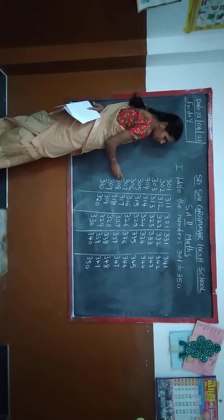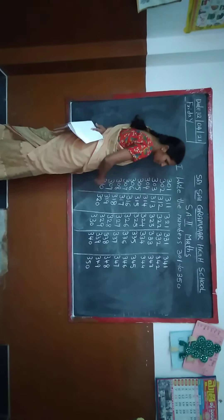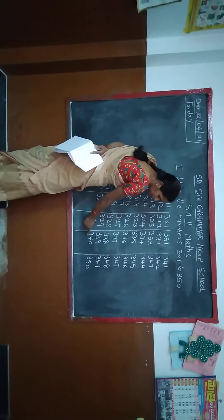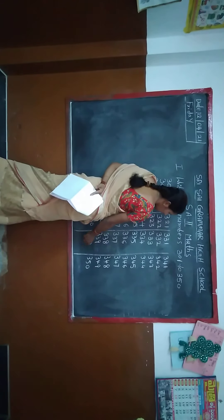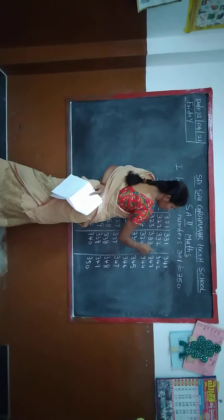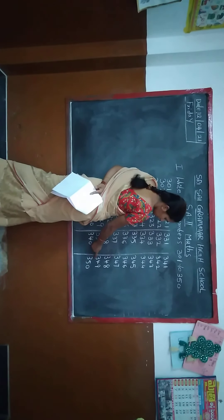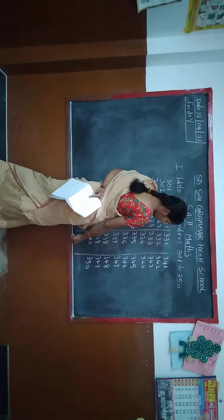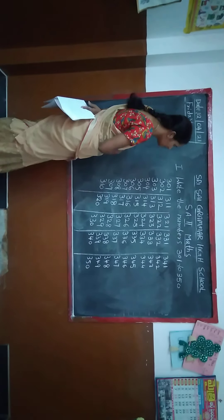What is this number? 307. Look there — what is this number? 340. Tell me. 340. What is this number? 342. What is this number? 349.